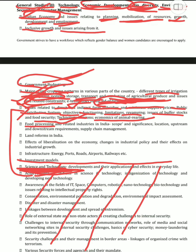Then we have food processing. Before this topic, we've already covered food security, buffer stocks, how they are distributed, integrated farm subsidies, storage and so on. Now food processing related industries in India — food processing scope, its significance, location, upstream and downstream requirements, and supply chain management. Supply chain management and inclusive growth are very important — in every past year paper I've seen, there has been some question from here, directly or indirectly.